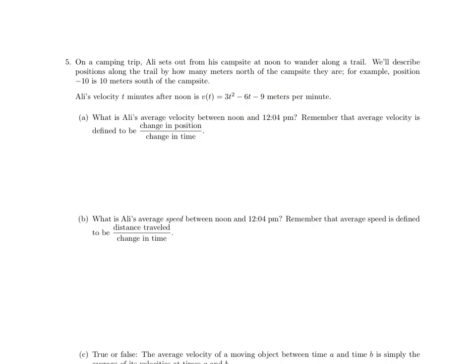Our first question asks what is Ali's average velocity between noon and 12:04 pm? Remember that average velocity is defined to be change in position over change in time. Just like we said with this original issue, position is not the same thing as distance traveled. Luckily, our velocity here is discussing rate of change of position. This is really lucky for us because to utilize this hint that says average velocity is change in position over change in time, all we need to do to find change in position is take this velocity function and integrate it over the interval that we care about.